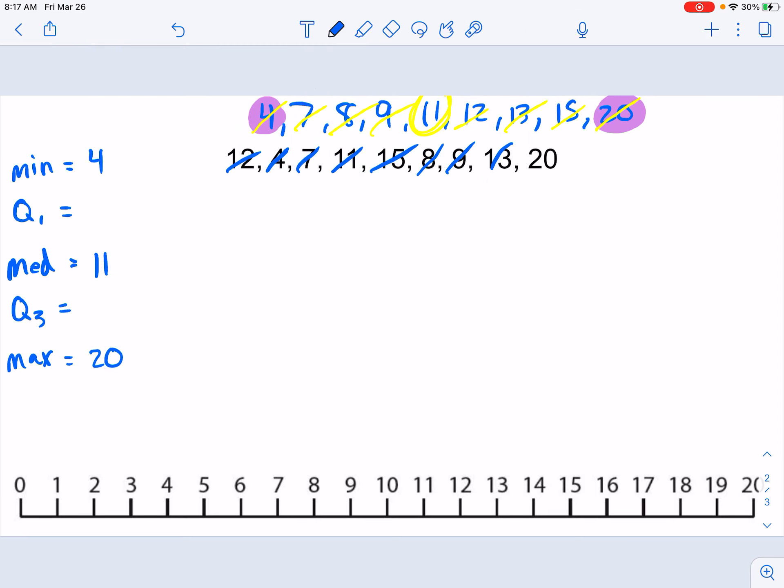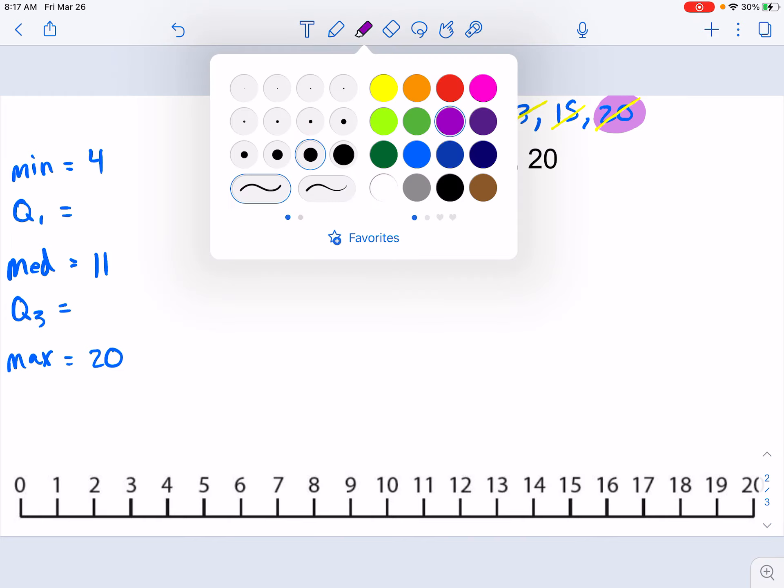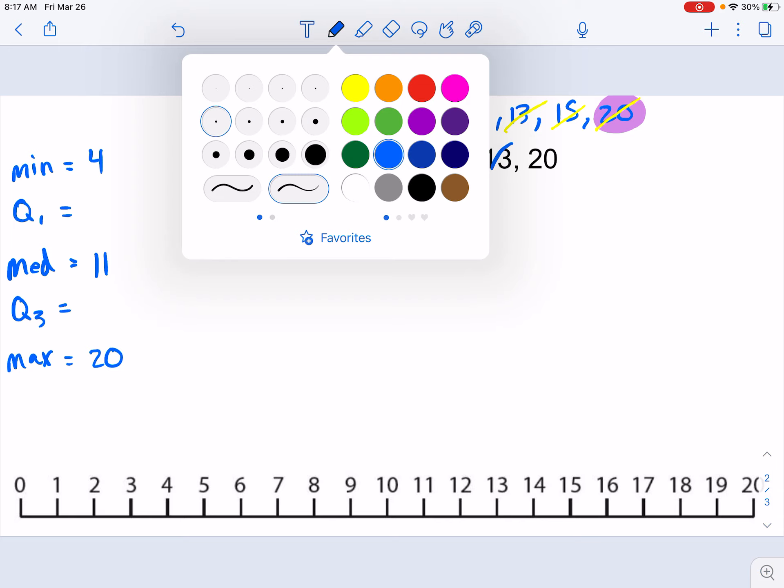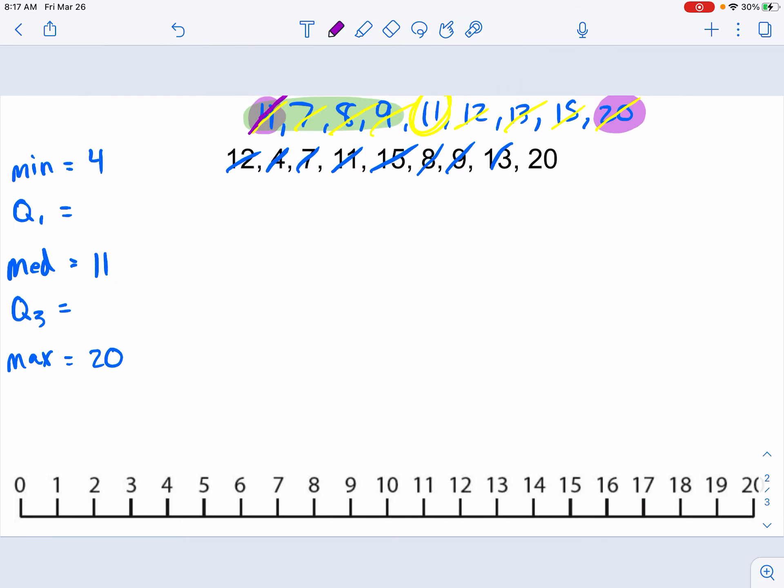Now to find quartile 1. What our lower quartile is, is we have to look at the bottom 50%, the bottom half of our data. So these four numbers here. We need to find the median of those values, the middle of the bottom half. So if we get rid of 4 and 9, we're left with two numbers in the middle. So we do 7 plus 8 is 15 divided by 2 is 7.5.